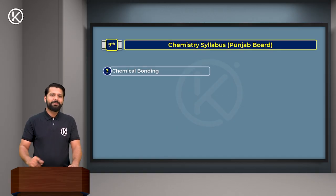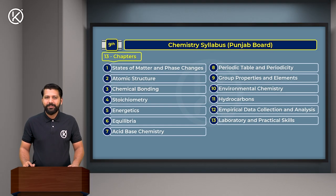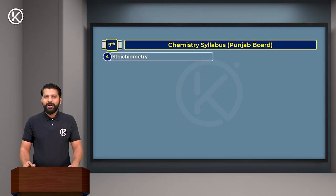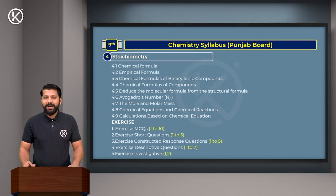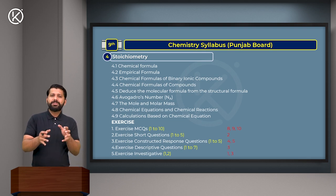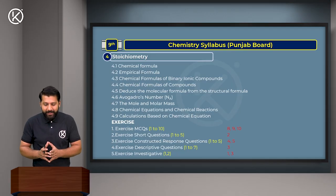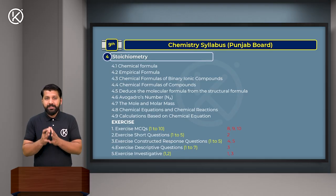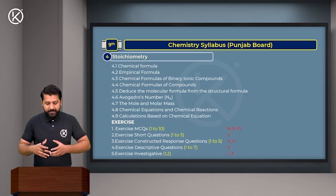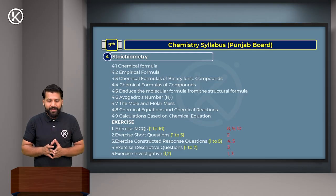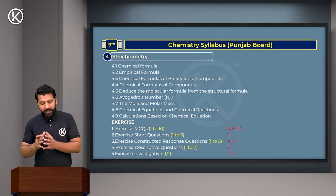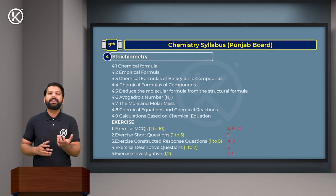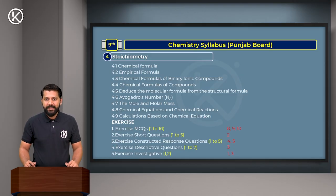Chapter 4 is Stoichiometry. In this chapter, no topics are excluded - you should understand everything. However, some exercise questions are excluded: MCQs 8, 9, and 10; Short Question 2; Constructive Response Questions 4 and 5; Descriptive Question 3; and Investigative Questions 1 and 3.